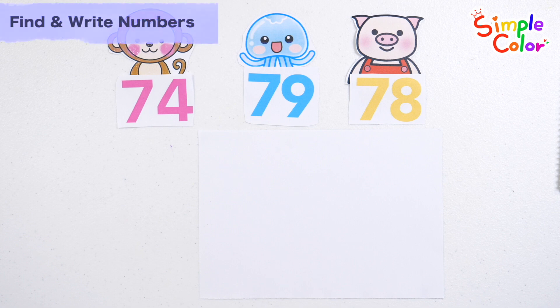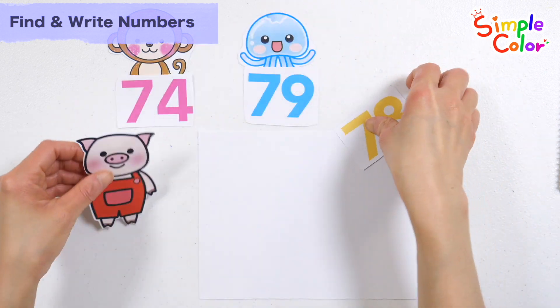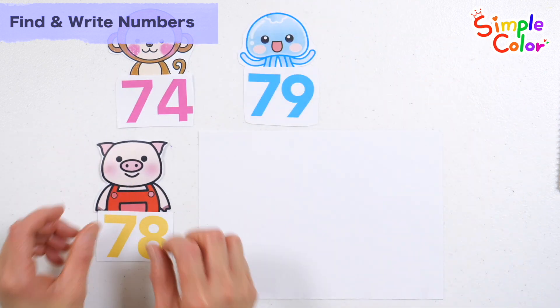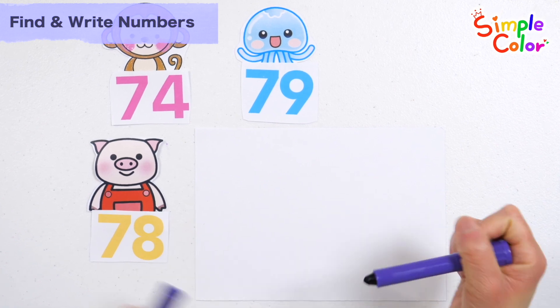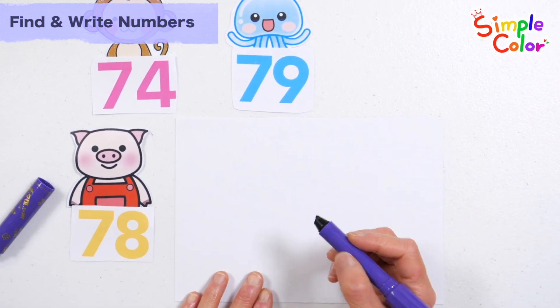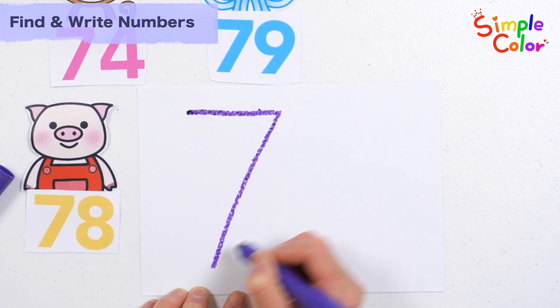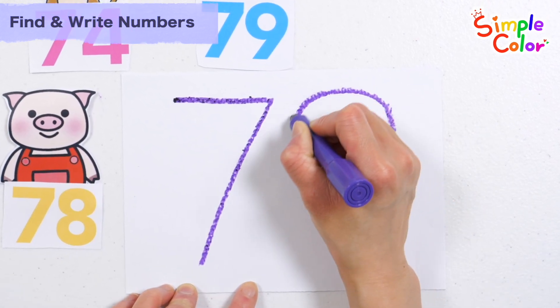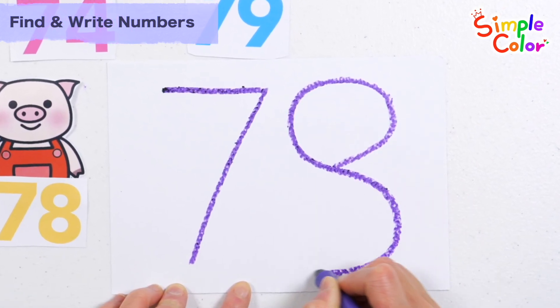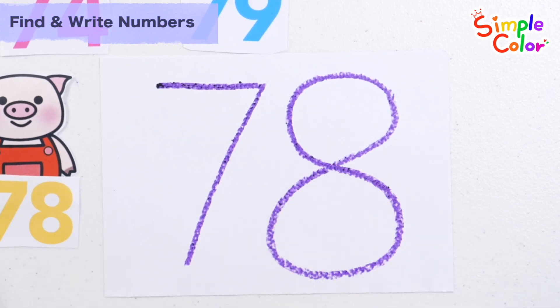Animal friends have numbers. Who has 78? That's right! The pig had the number 78. Shall we write the numbers in large letters on the right and read them? 78. Very good!